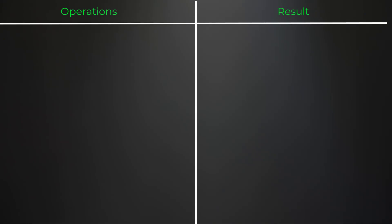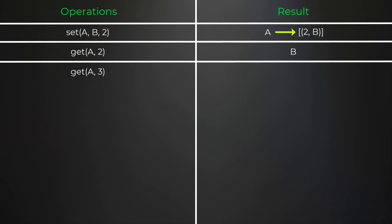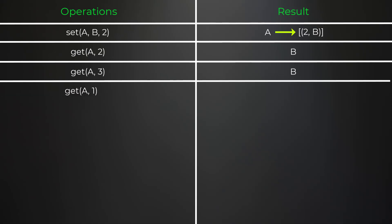On the left side of the screen I'll have all of the operations we're going to perform, and on the right side will be the results. First we set key 'a' to value 'b' with timestamp 2, giving us key 'a' mapping to a list containing the tuple (timestamp=2, value='b'). A get of key 'a' at timestamp 2 returns 'b'. A get of key 'a' at timestamp 3 also returns 'b', since timestamp 2 is the closest value less than or equal to 3.